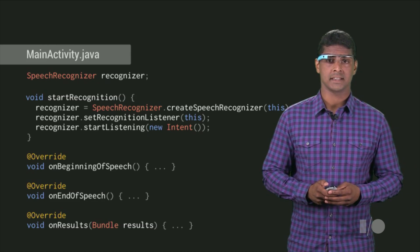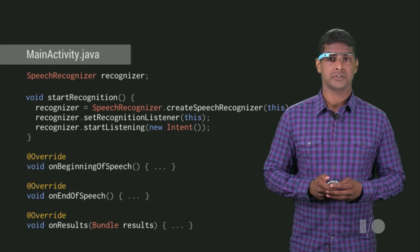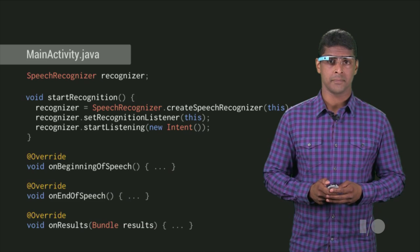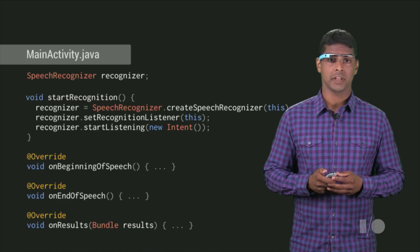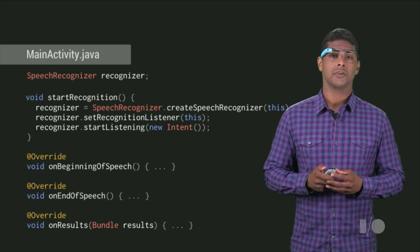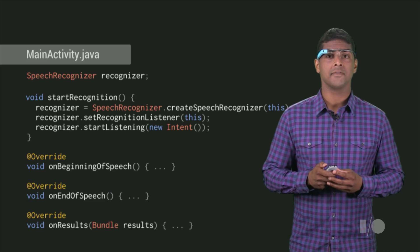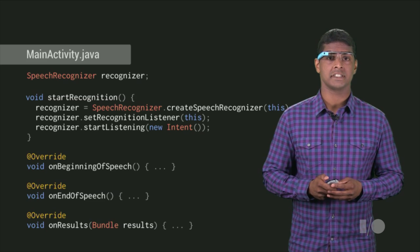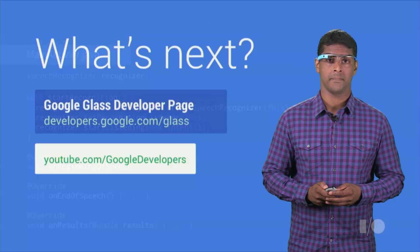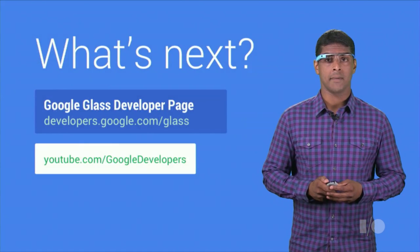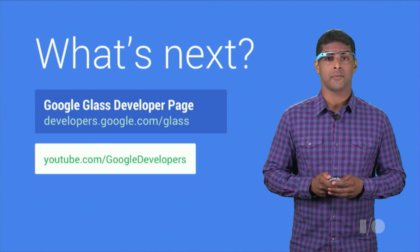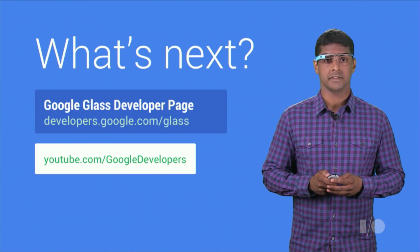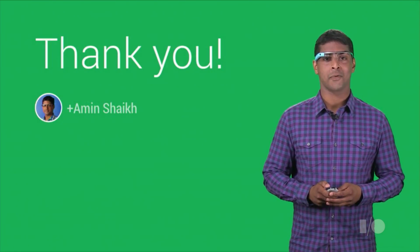With these Android APIs allowing fine-grained control over voice input, along with the Glass-specific invocation and contextual APIs, you can create a compelling, voice-driven experience to power your GDK Glassware. To find out more, make sure to visit our website and check out the Google Developer's YouTube channel for more Glass videos. Thank you for watching.